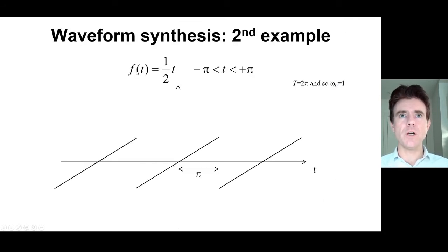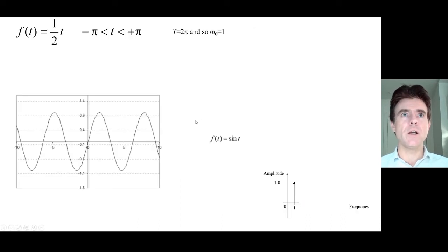Here's a second example. Now we're taking, effectively, a linear function, just f(t) = (1/2)t. But we're defining this linear function with a gradient of a half just over the period -π to +π. So overall period T = 2π. And then we're repeating this periodically from minus infinity to plus infinity. So can we create this function? And the answer is yes, we can.